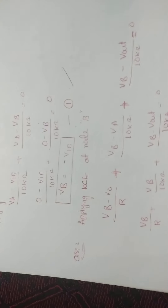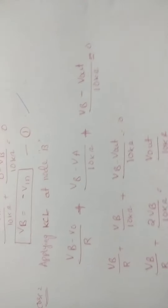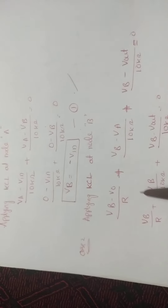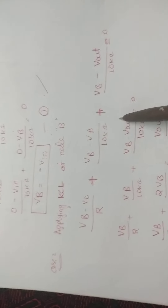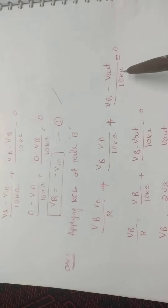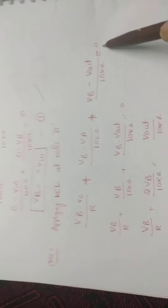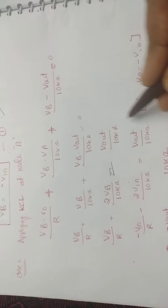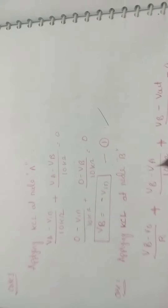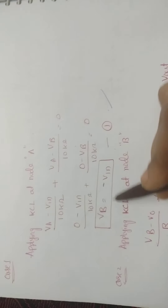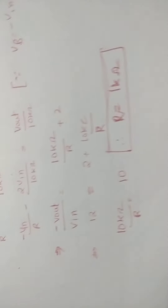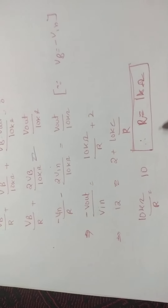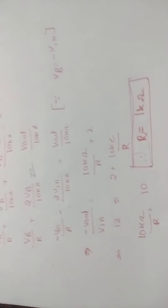For case 2, applying KCL at node B: (Vb − V0) / R + (Vb − VA) / 100 kΩ + (Vb − Vout) / 10 kΩ = 0. Simplifying: Vb/R + 2·Vb / 10 kΩ = Vout / 10 kΩ. Substituting Vb = −Vn from node A and simplifying, the R value becomes 1 kΩ.